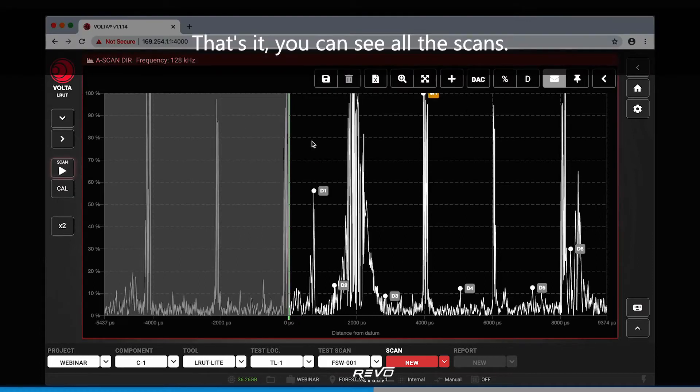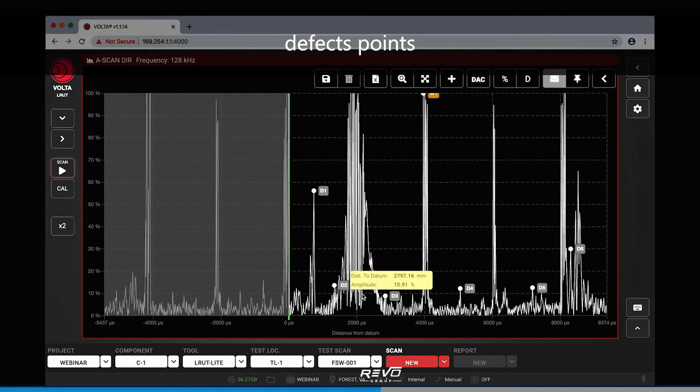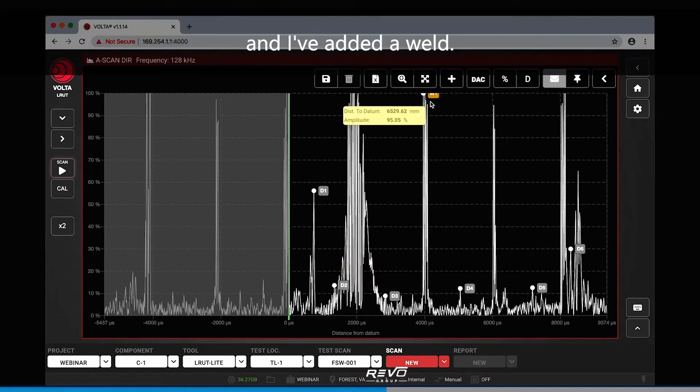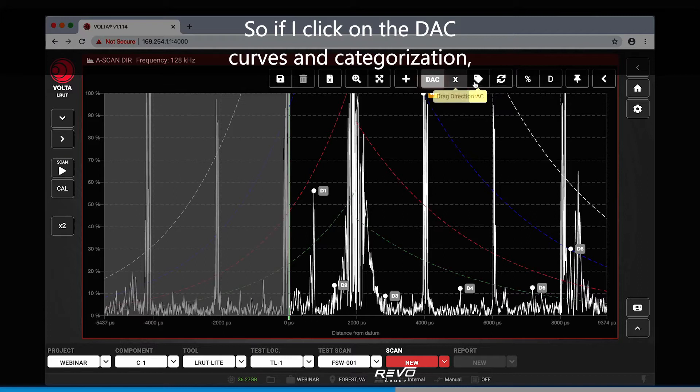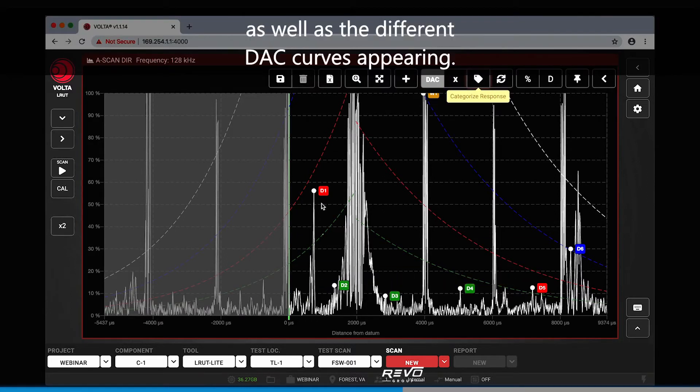That's it. You can see all the scans. In fact, I've created defect points along this, and I've added a weld. So if I click on the DAC curves and categorization, you can see the defect categories as well as the different DAC curves appearing.